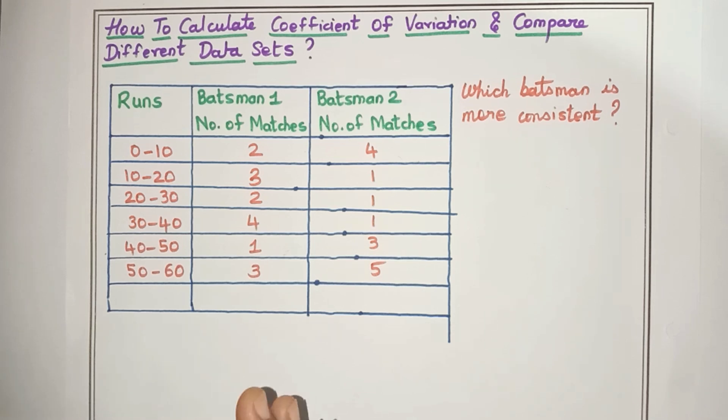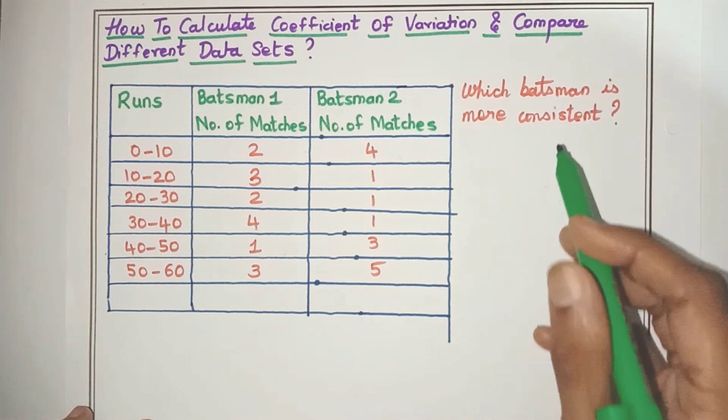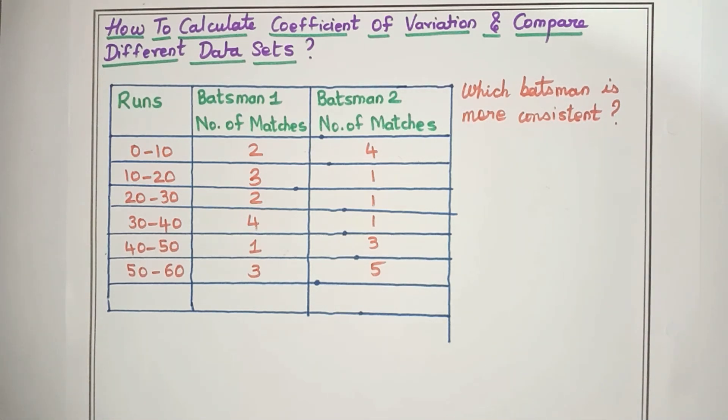So in this example, we have runs for two batsmen in 15 matches. The question is to find out which batsman is more consistent.